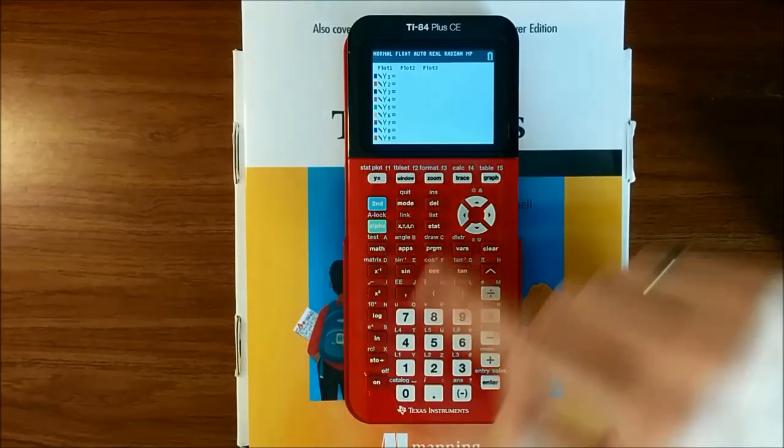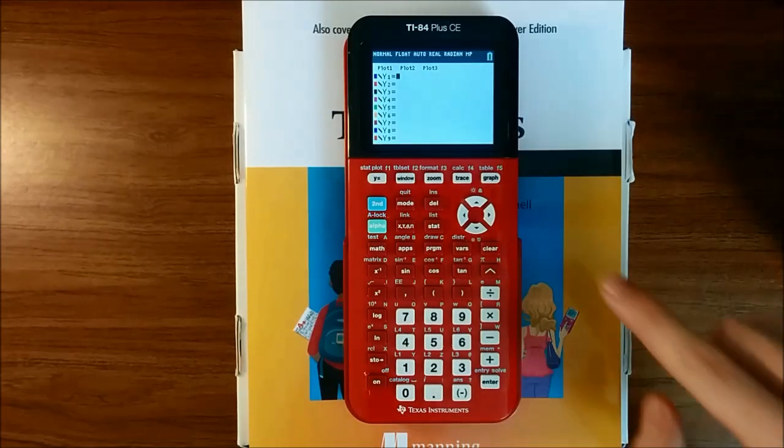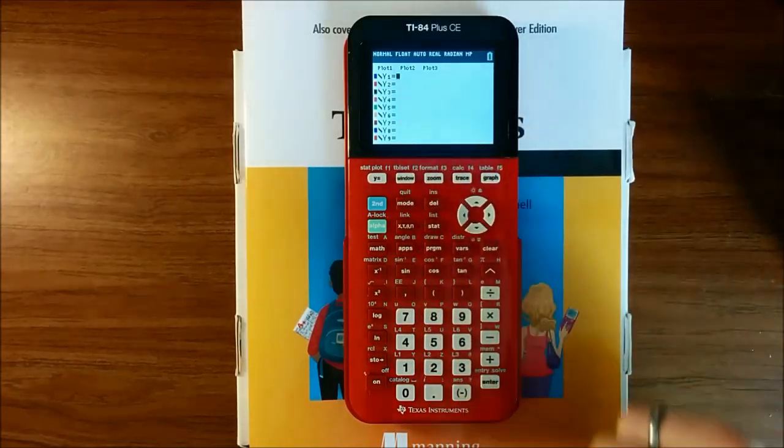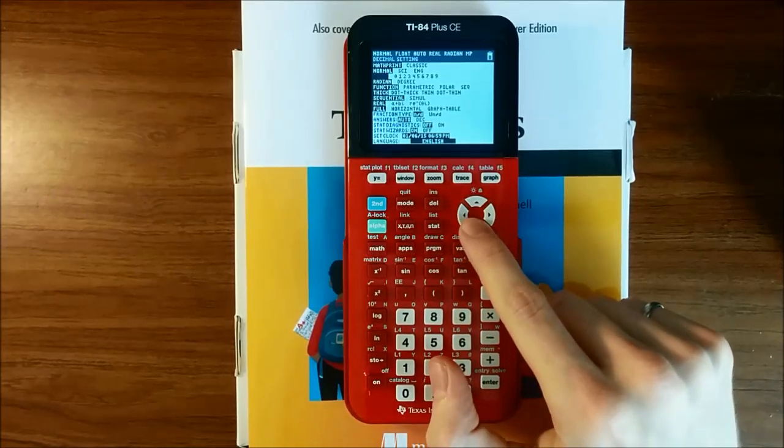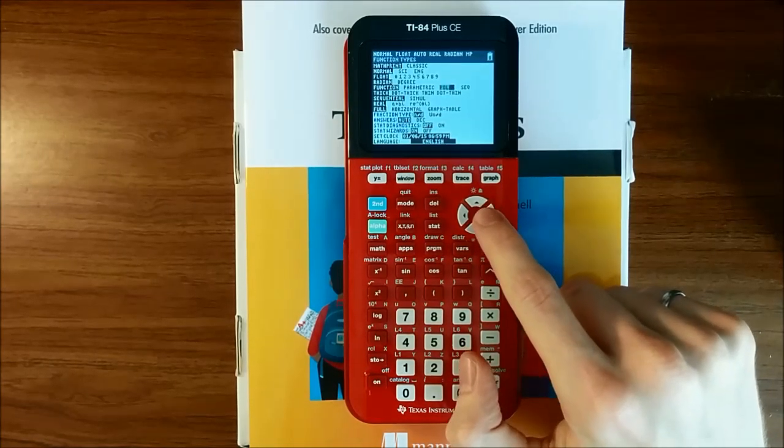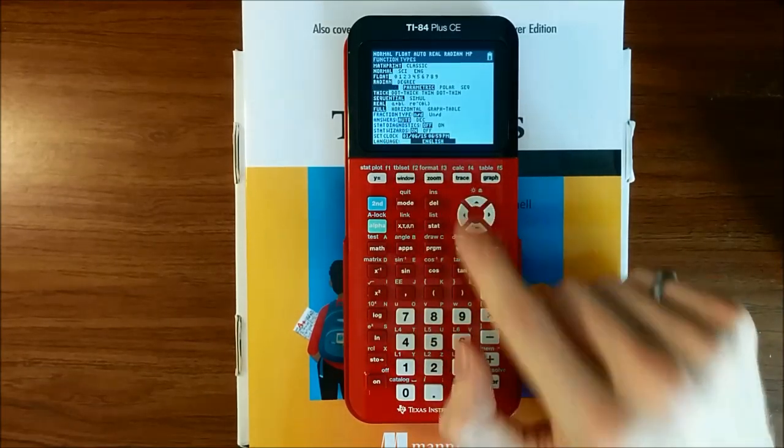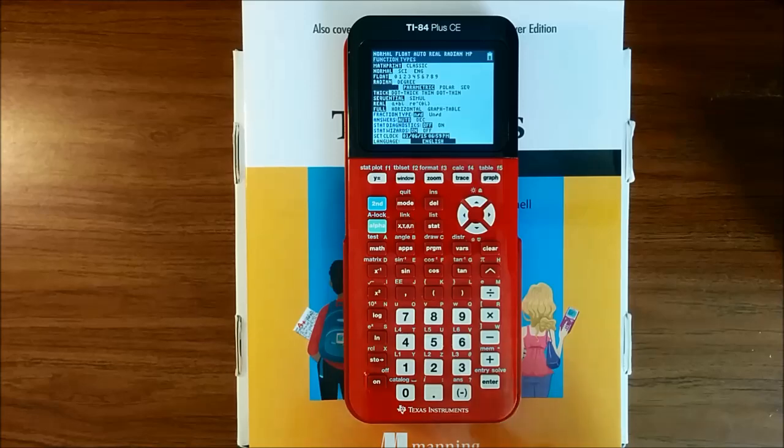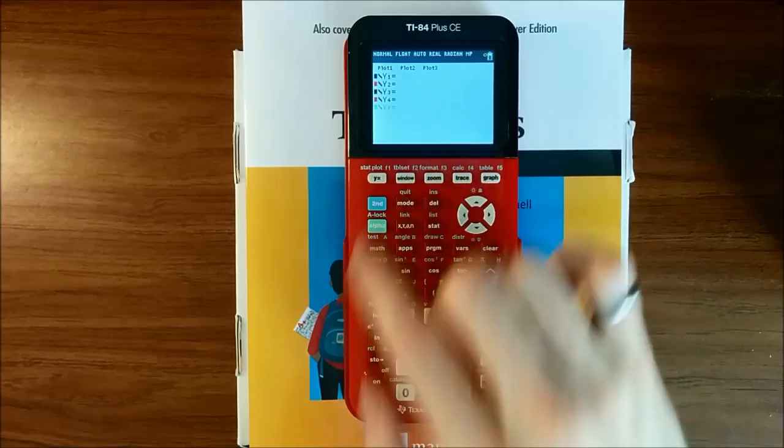We'll start by pressing Y equals, which brings us to a screen full of Y equals prompts. Each of these allows us to enter a different equation to graph. If you don't see Y1, Y2, Y3, etc. on your Y equals screen, try pressing mode, going down to function, and making sure that function is in white text on a black background, meaning that it's enabled. If one of the other options, like parametric, polar, or sequential, is highlighted, function will appear black on a white background, meaning it is not enabled. Move your cursor over to function, and press enter to choose that option, then return to Y equals.